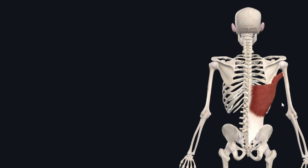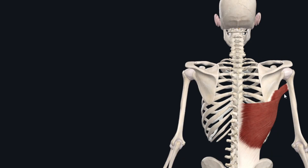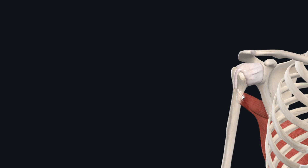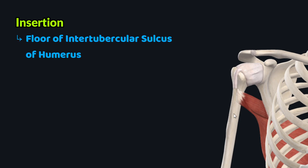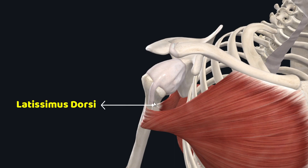After their origin from different areas, the fibers of the latissimus dorsi muscle converge superolaterally to form a single flat tendon. This tendon of insertion passes anterior to the teres major muscle just before its insertion into the proximal part of the humerus. After passing anterior to the teres major, the flat tendon inserts into the intertubercular sulcus of the humerus.